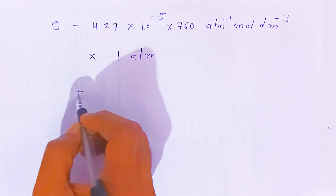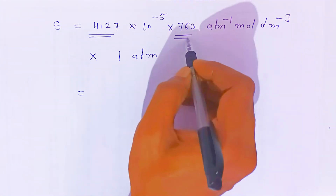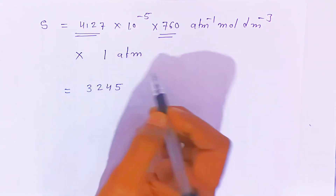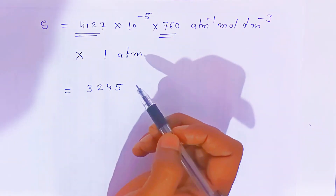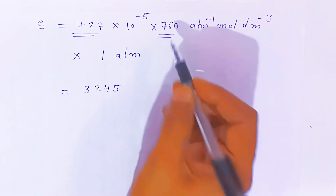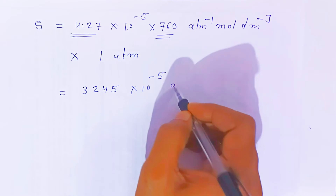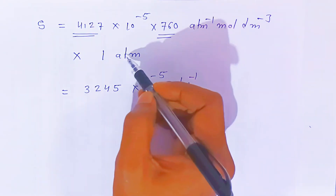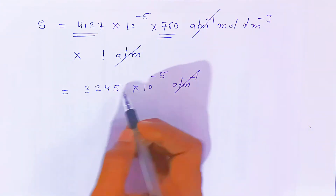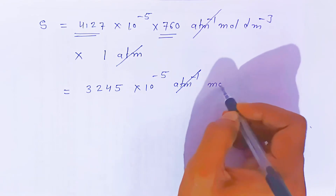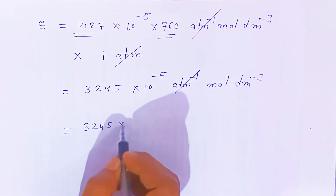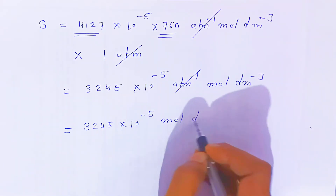So this will come as it is. When you multiply 4.27 × 10⁻⁵ by 760 per atmosphere mole per dm³, the atmosphere cancels with per atmosphere. When you multiply 4.27 by 760, you get 3245. So the result is 3245 × 10⁻⁵ mole per dm³. This is the solubility.